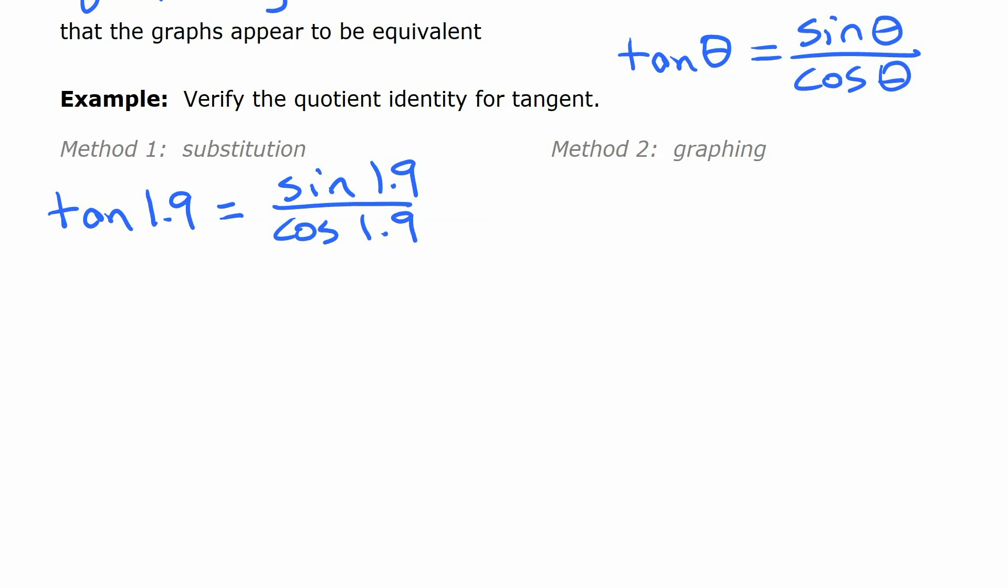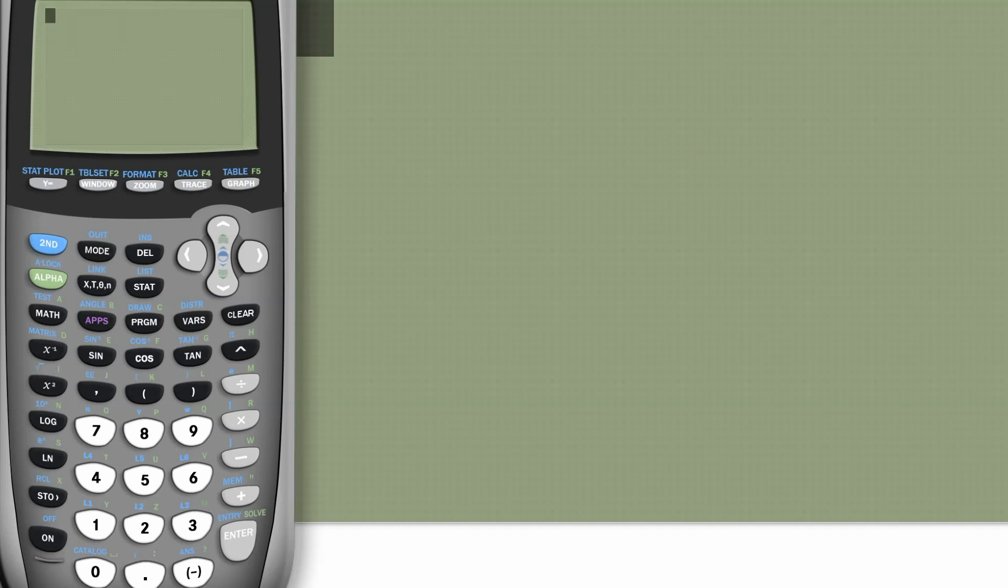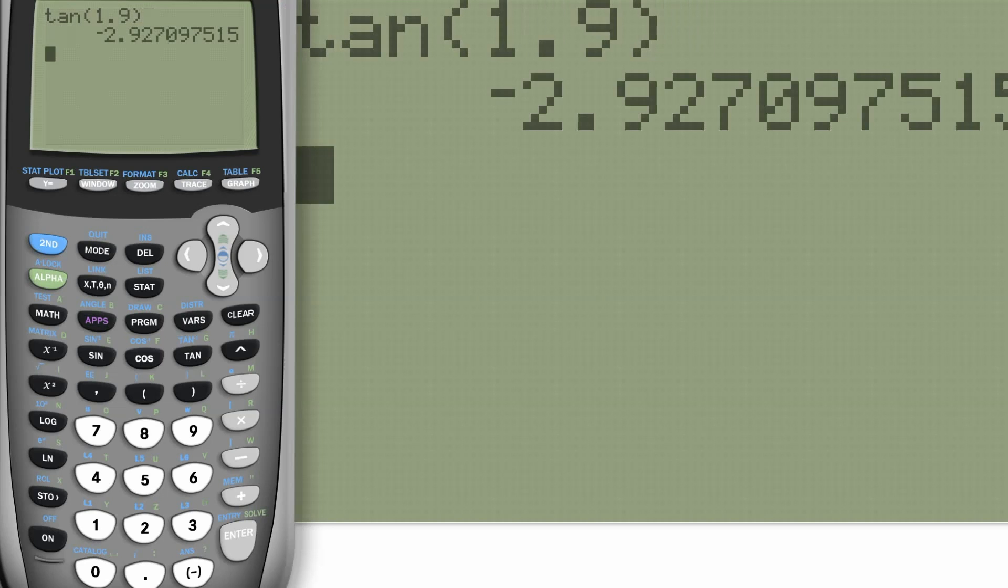So, if we check tangent of 1.9, that value we're going to substitute in, we get that as the value. So that's what the left side of that identity is equal to when theta is equal to 1.9.